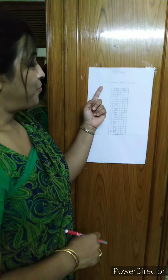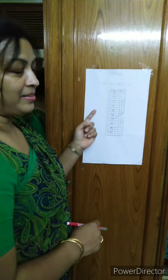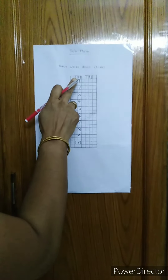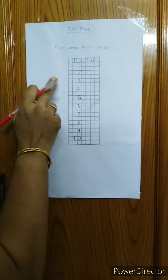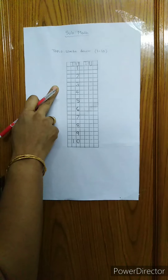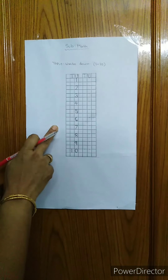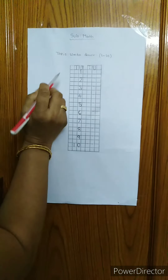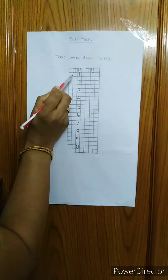Okay? Learn the math rhymes. Follow the chart. Today, our topic is write down 1 to 10. This is a chart. Everybody follow this chart. Now, say with me.